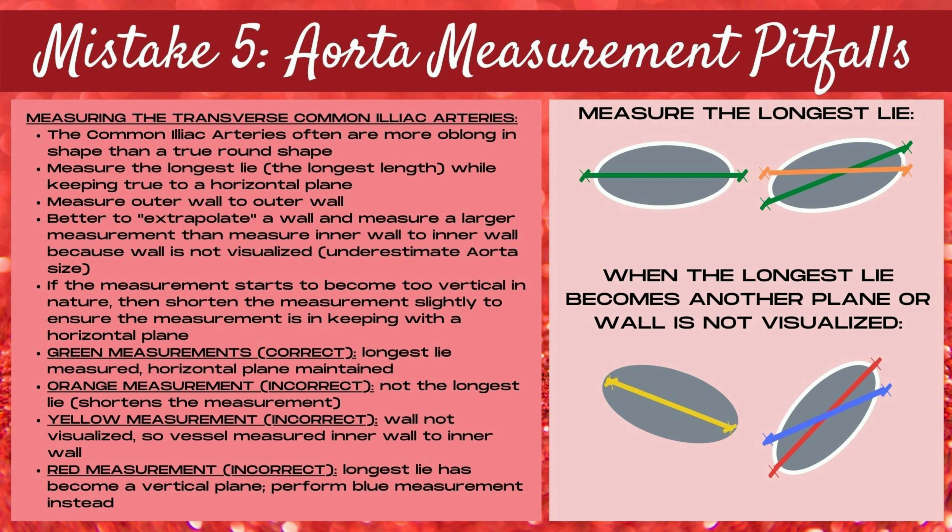If the measurement starts to become too vertical in nature, shorten the measurement slightly to ensure it remains in a horizontal plane. The green measurements at the top of this diagram are correct — they measure the longest lie of the common iliac arteries while maintaining a horizontal plane. The orange measurement at the top is incorrect; the longest lie of the common iliac artery is not being measured, which artifactually shortens the measurement. In the bottom diagram, the yellow measurement is incorrect — the wall is not visualized, so the vessel is being measured inner wall to inner wall, which shortens the aorta measurement.